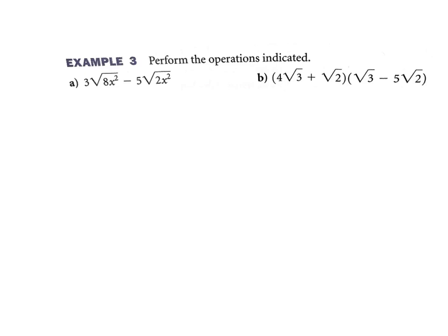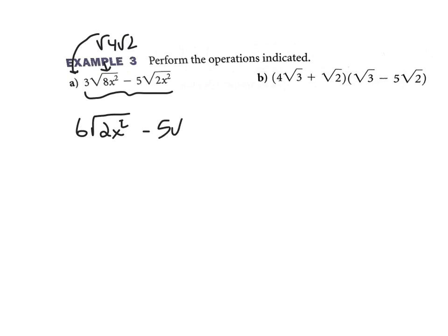The slide says perform the operations. You're allowed to add and subtract radicals, but they have to be the same, so don't add them yet. I can break the first one down — the square root of 8 can be broken into 4 and 2. If I take the square root of 4 out, which is 2, and combine it with the 3, I have 6. That leaves me with the square root of 2x squared inside, which matches the other term. Then 6 times the square root of 2x squared minus 5 times the square root of 2x squared gives 1 times the square root of 2x squared.